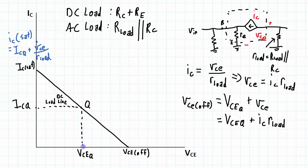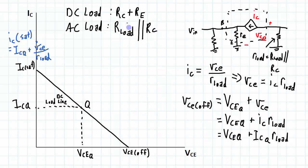It's going to be that amount there. So I can rewrite this again as VCEQ plus ICQ times R load. And again since R load is going to be less than RC plus RE,